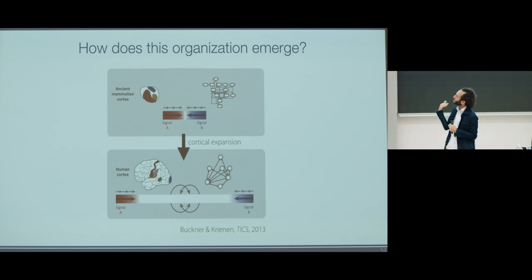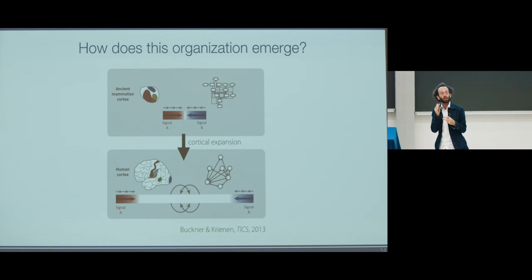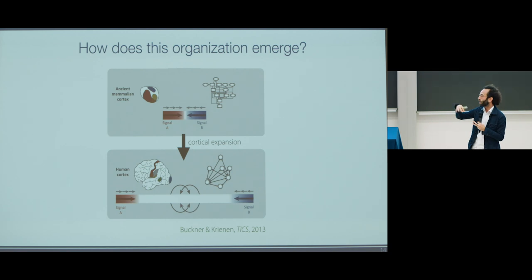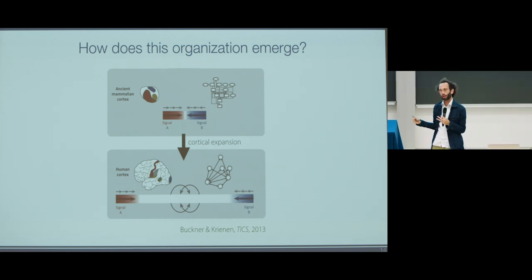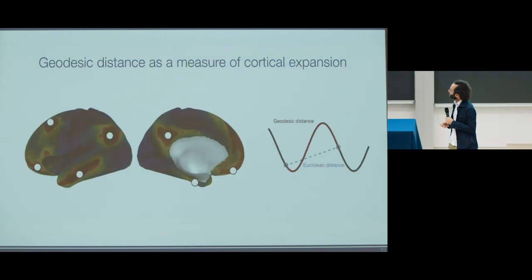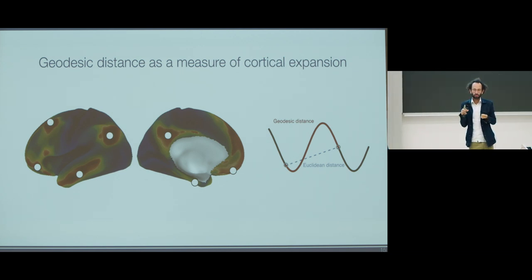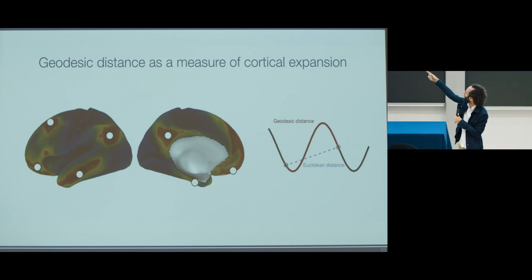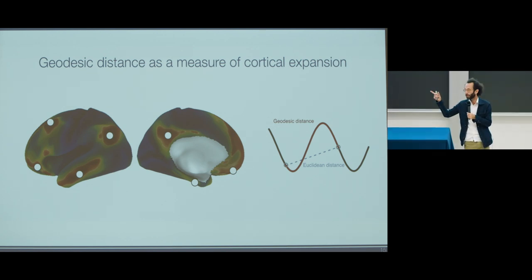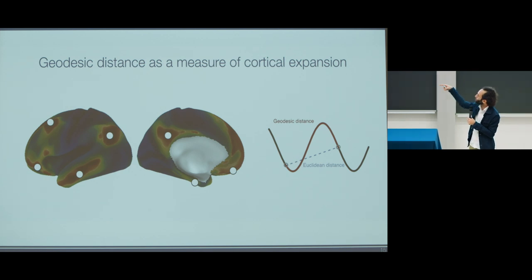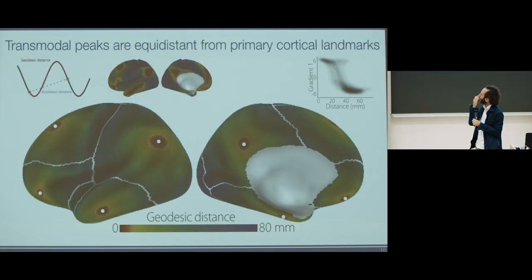What this suggested is that if this is the case, there should be a highly precise spatial mapping between the position of association cortex and the location of primary areas. We aimed to test that by using the distance along the cortical surface as a way to characterize this expansion as a relationship between regions. We placed seed regions at those white points you see on the cortex, located at the local maxima of the principal gradient, and just measured every other point—how its shortest distance to any one of those points. Here's what we observe.